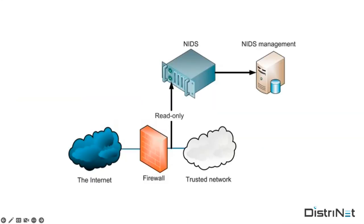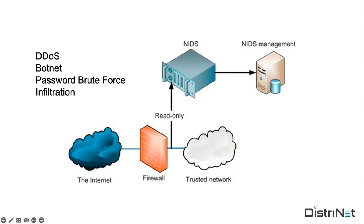Since I understand there are quite some people from the malware and hardware security background, I assume most of you will know what a network intrusion detection system is, but I'll give a brief overview anyway. In a network intrusion detection system, you look at incoming and outgoing traffic and check it for suspicious activities. If there are any alerts, they get sent to a management system which can decide to alter firewall rules or change network topology. The types of attacks we usually try to detect include DDoS attacks, botnet attacks, password brute force, and infiltration.